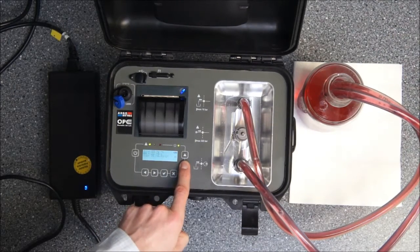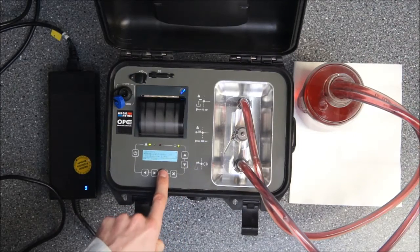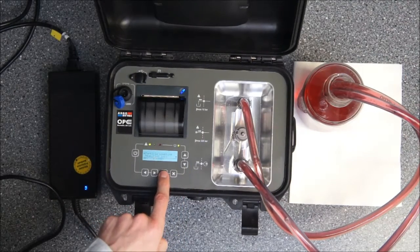For automatic mode we go into the menu by pushing one time the down button. Then you see we have the measurement settings and in the measurement settings there is the option for particle counting.